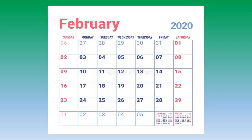February is the second month of the year. February has fewer days as compared to other months. For example, other months are having 30 or 31 days whereas February is having 28 days or 29 days as per the leap year.